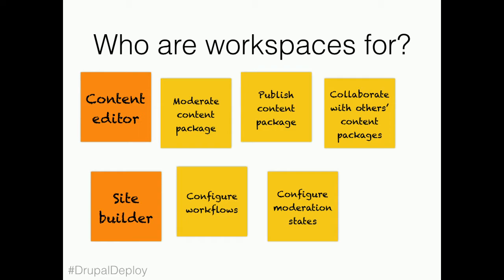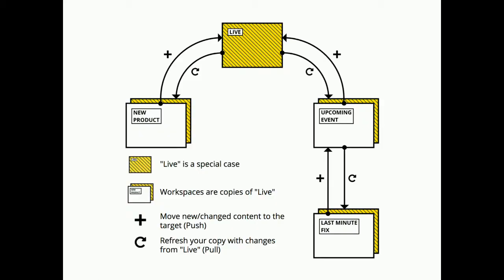I'm going to try to explain what a workspace is by having three workspaces — three content packages being worked on at the same time. We've got the live workspace, the live version of your site that visitors see. We've got three changes going on: one introducing a new product, one where editorial staff might be working on an upcoming event, and then last-minute fixes to the upcoming event. So we've got three parallel changes going on.